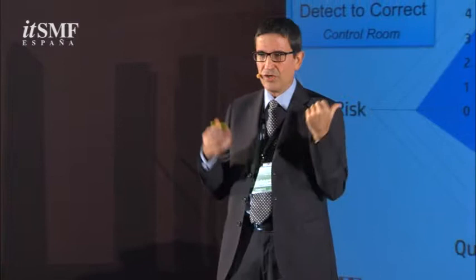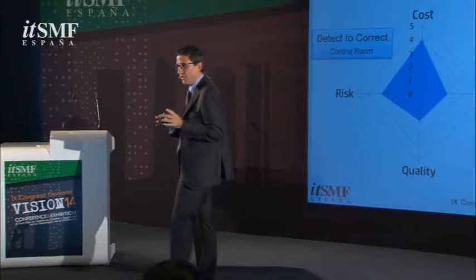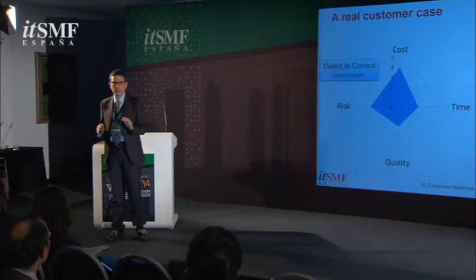We applied this approach to real customers. For an important bank in Europe, we showed the four dimensions and asked: which are your problems? In detect to correct, quality was okay, risk was acceptable, time was acceptable — but cost was huge. Hundreds and hundreds of external people working on their systems with tons of manual activities. On request to fulfill, there was only one problem: time. It was taking 90 days to deliver a system from the very beginning of the request.